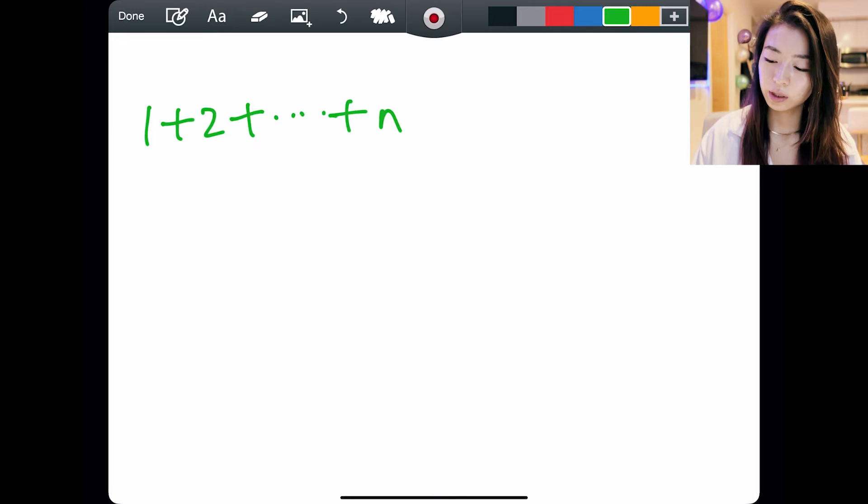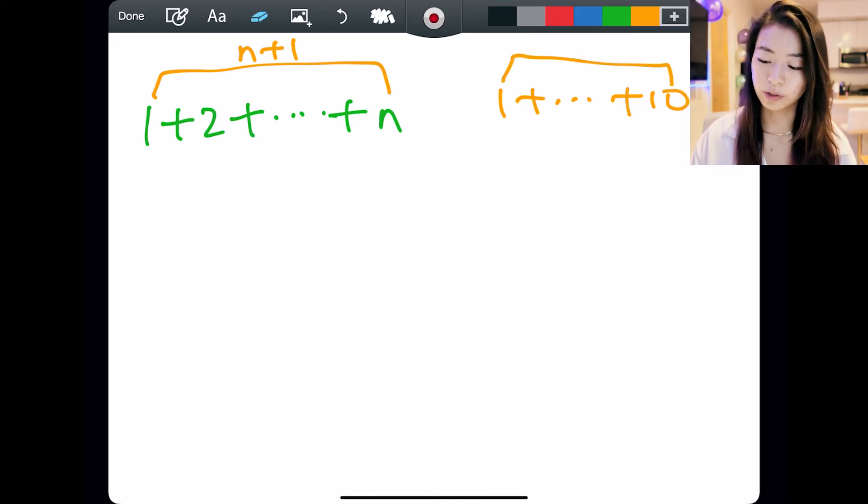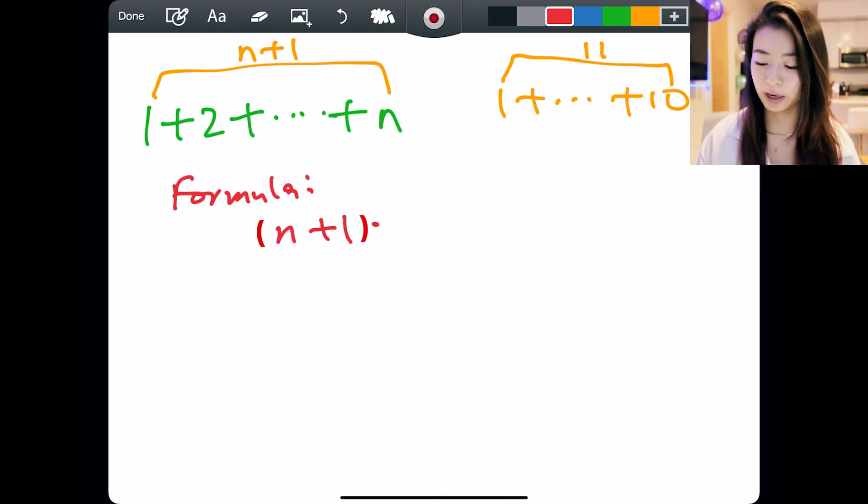So the sums that we have are always going to be n plus 1. In our small example of 1 plus all the way to 10, our n plus 1 was 11. That was the sum we always have. So our formula is going to be n plus 1 times the number of pairs.